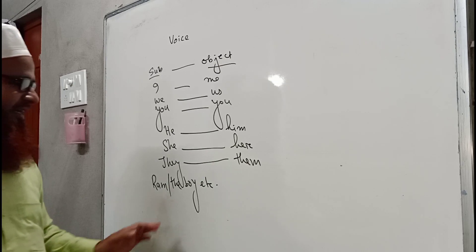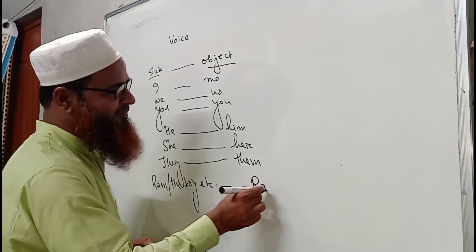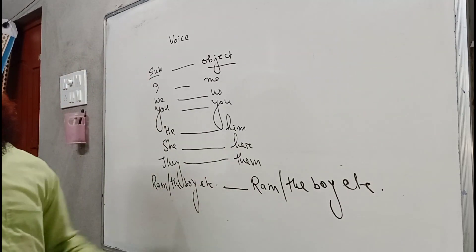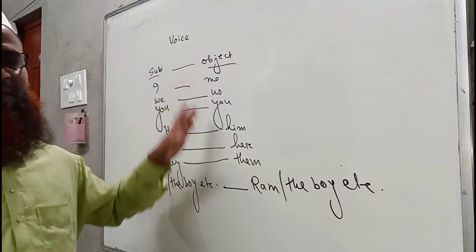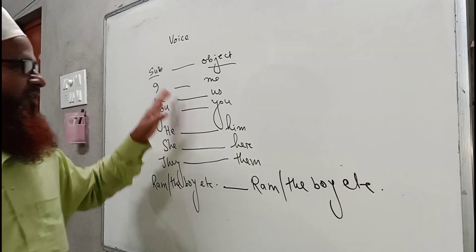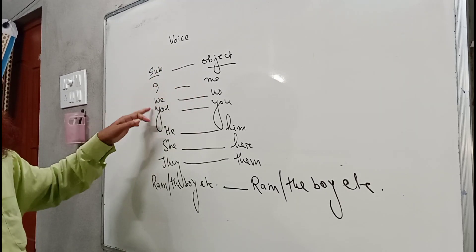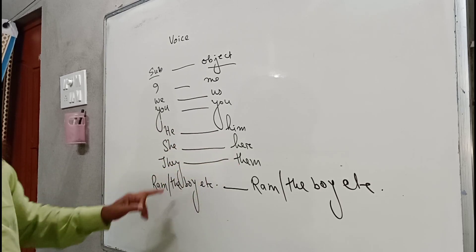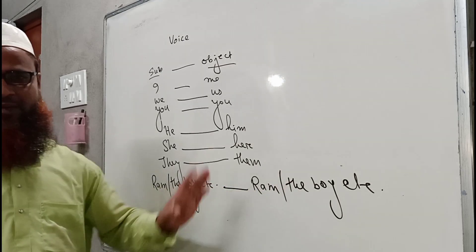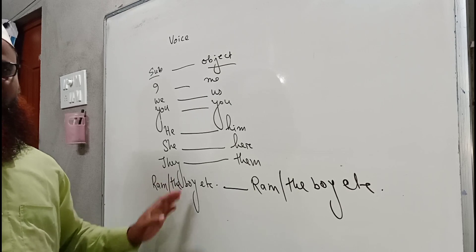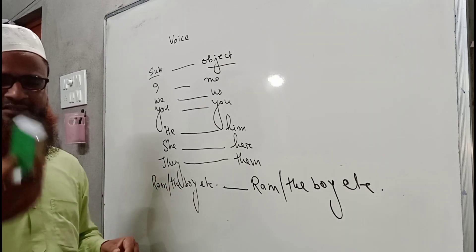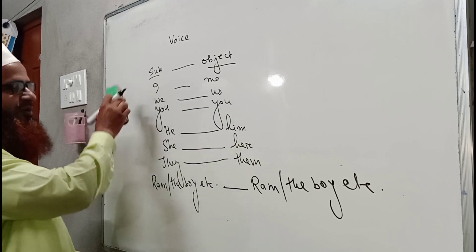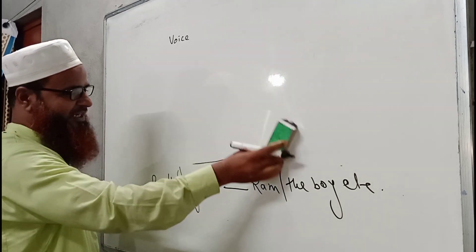Whatever noun comes, that noun will remain the same in object form also. So the rule is very simple and important to understand for voice. To recap: I→me, we→us, you→you, he→him, she→her, they→them, and any noun stays the same. You have already known the subject form and object form of the pronouns, and how a sentence of present indefinite tense is changed into passive voice.